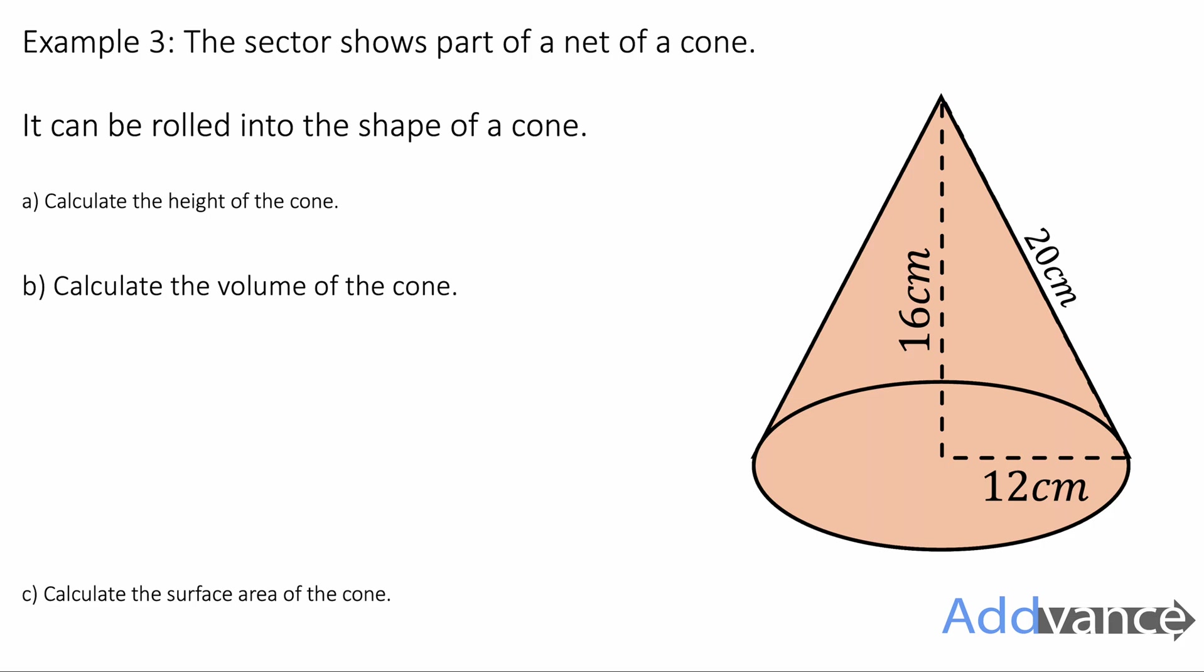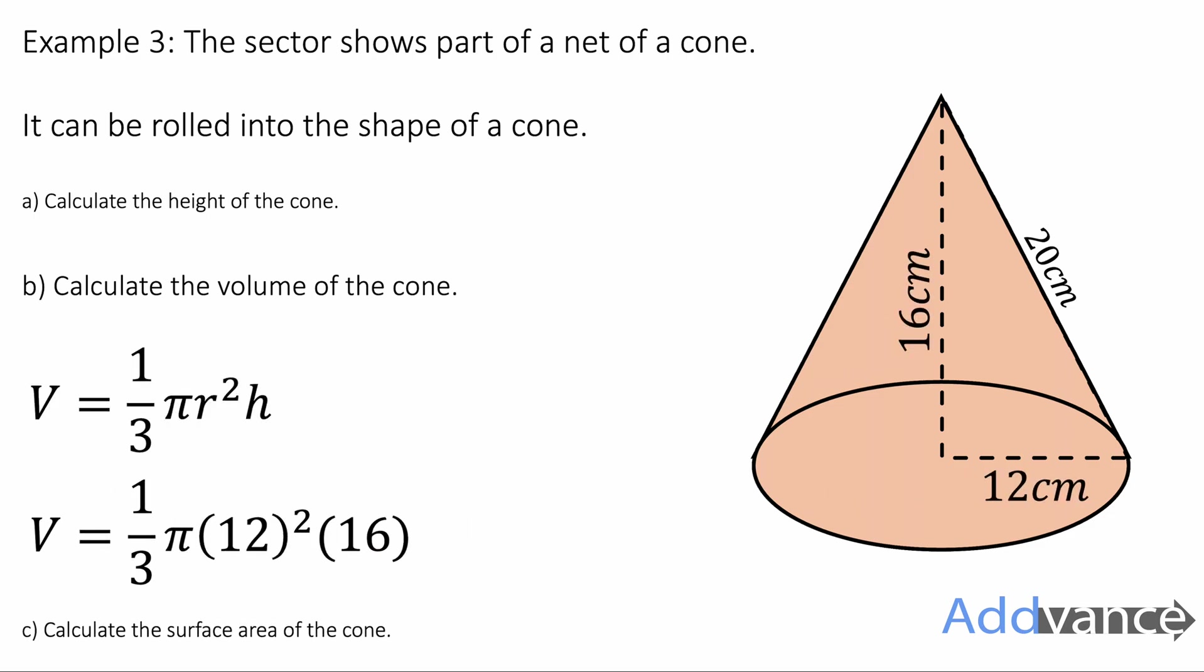Now let's find the volume. The volume will be given by ⅓πr²h, where r is 12 and height is 16. Tap that into the calculator, and you will get 768π centimetres cubed. It's fine to leave your answer in terms of π.